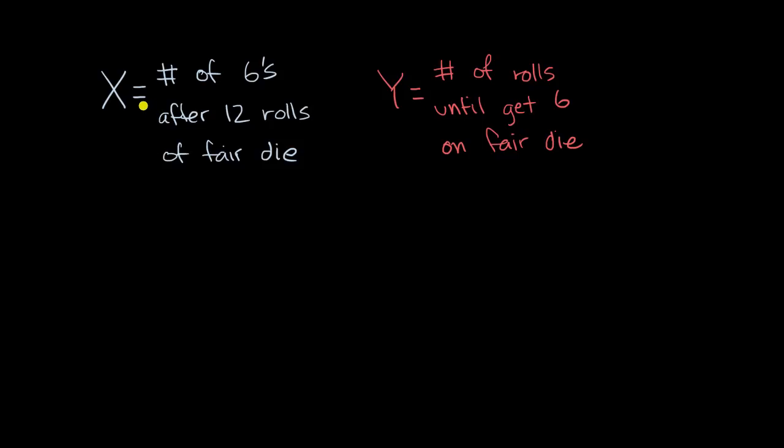So this first random variable, X, is equal to the number of sixes after 12 rolls of a fair die. Well, this looks pretty much like a binomial random variable. In fact, I'm pretty confident it is a binomial random variable, and we could just go down the checklist.